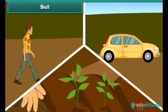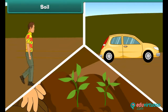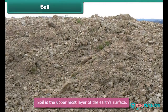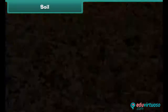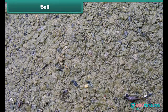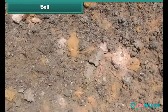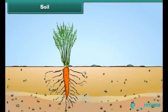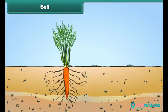It is everywhere — we walk on it, we drive on it, and we grow plants on it. Wondering what it is? It is soil. Soil is the uppermost layer of the earth's surface. It consists of a mixture of rock finely ground into powder, water, air, minerals, and a variety of living and dead life forms.